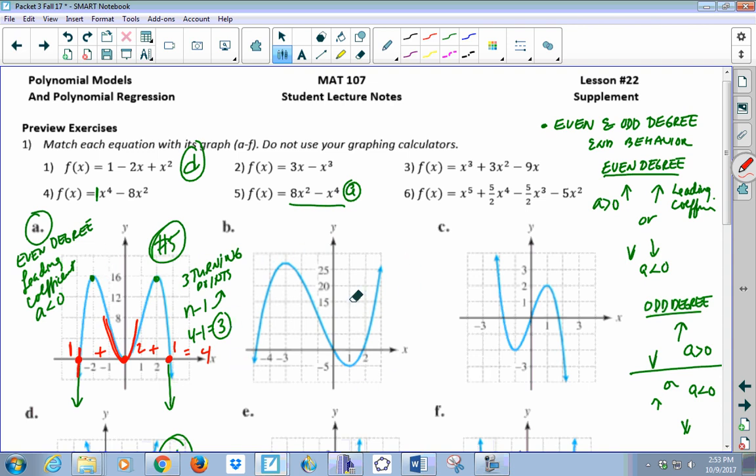So here we have two turning points. Two turning points. This tells us the smallest degree this would be is three. So we're in odd degree. Our right arm is going up, so that means our leading coefficient A is positive. So we have degree three with a leading coefficient that's positive. So let's take a look. Here's a degree three. The leading coefficient is not positive. Here's a degree three, and the leading coefficient is positive. So this is graph B, and this is equation number three.